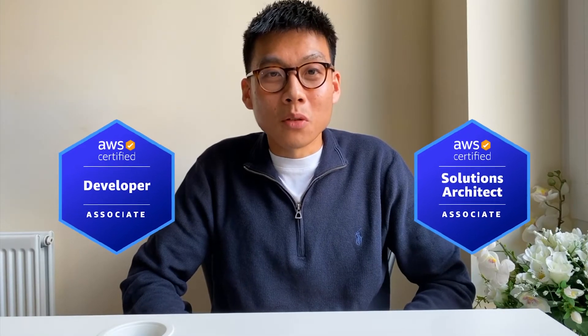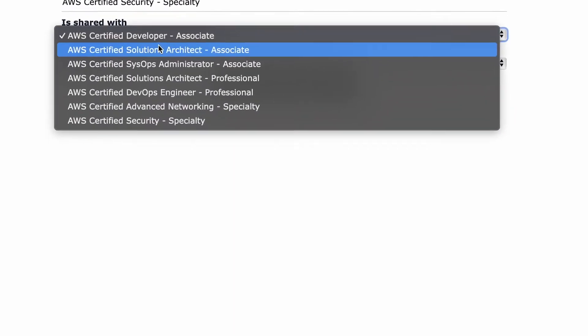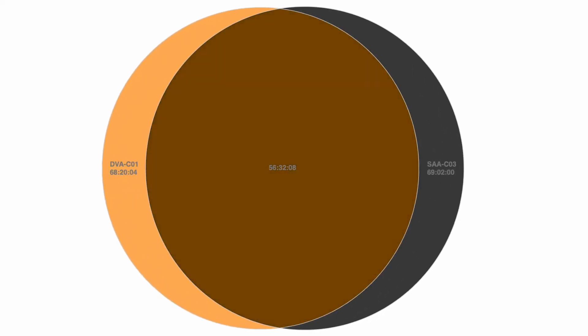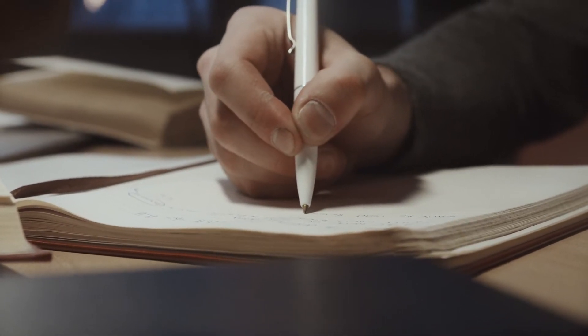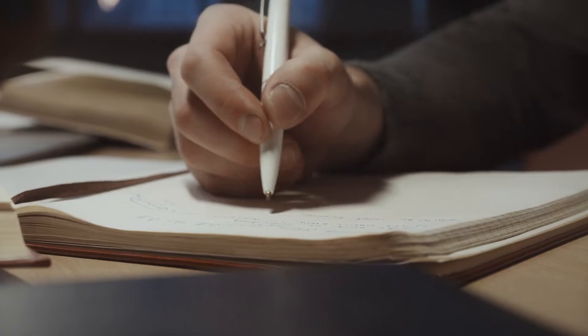The Developer Associate relies heavily on the content covered by the Solutions Architect so it makes sense to do both. However, you don't have to study for both individually — there is a huge amount of overlap. In fact, a visualization of Adrian Cantrell's Solutions Architect Associate course and his Developer course shows 81% of the content is shared. What I did was study for both courses at the same time and then take the exams within a few weeks of each other, and I would recommend this approach. However, if you're a beginner only interested in the Developer Associate, it's still possible with the resources I'll highlight later.